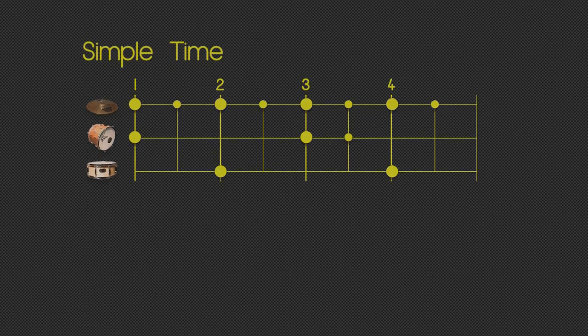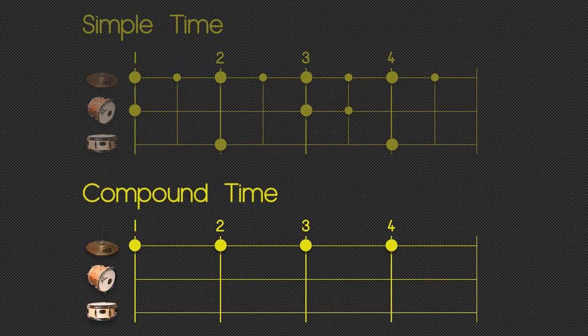Now let's move on to compound timing. Again, we're going to start off with our hi-hat on each of the 4 beats in the bar: 1, 2, 3, 4.